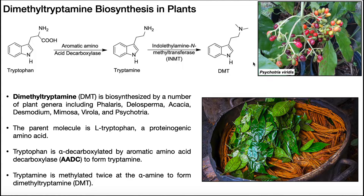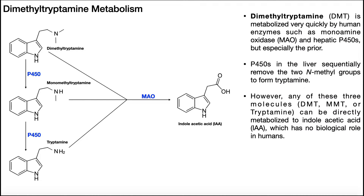So that's how DMT is biosynthesized. Now of course humans have been known to take this recreationally. We're going to start by talking about the metabolism before the effects, because we need to understand one important aspect. There are two major pathways to get rid of dimethyltryptamine in the body. The first one involves the liver, and this is actually the minor one.